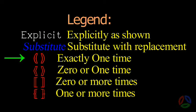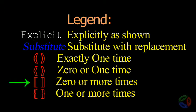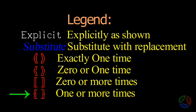Double parentheses indicate that one and only one element from a list of alternatives may appear in the syntax. When the choice list is delimited with double angle braces, only one element may appear or not. When a choice list is delimited with double square brackets, zero or more elements are permitted in the syntax. And finally, when the choice list is delimited with double curly braces, one or more elements may appear in a sequence of syntax elements.